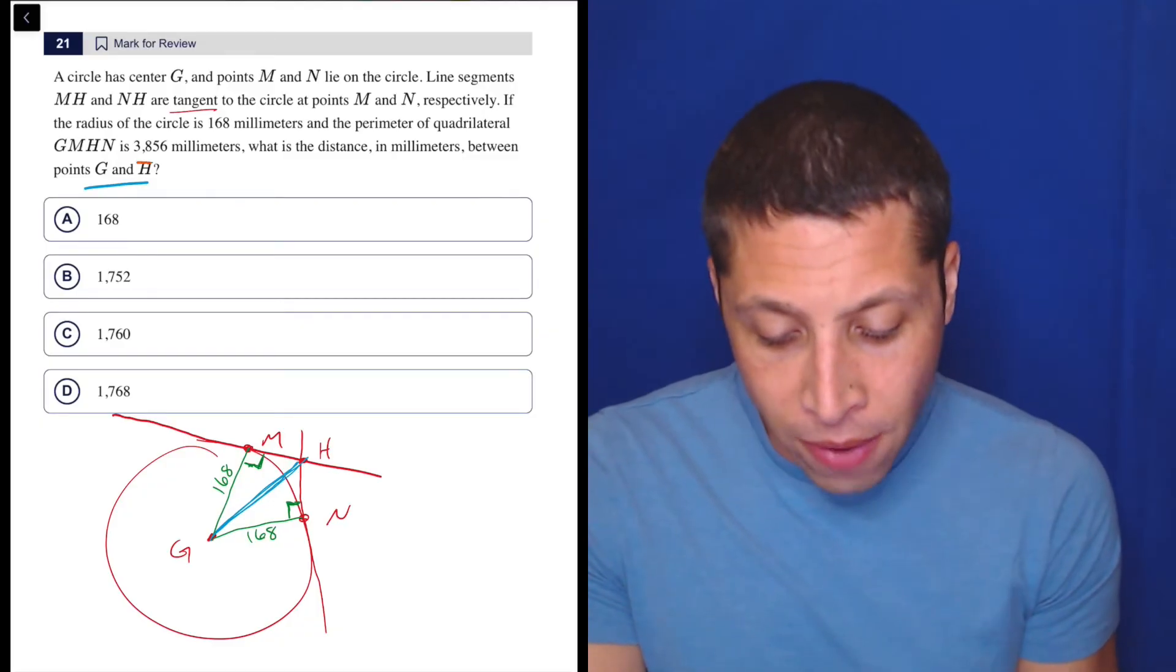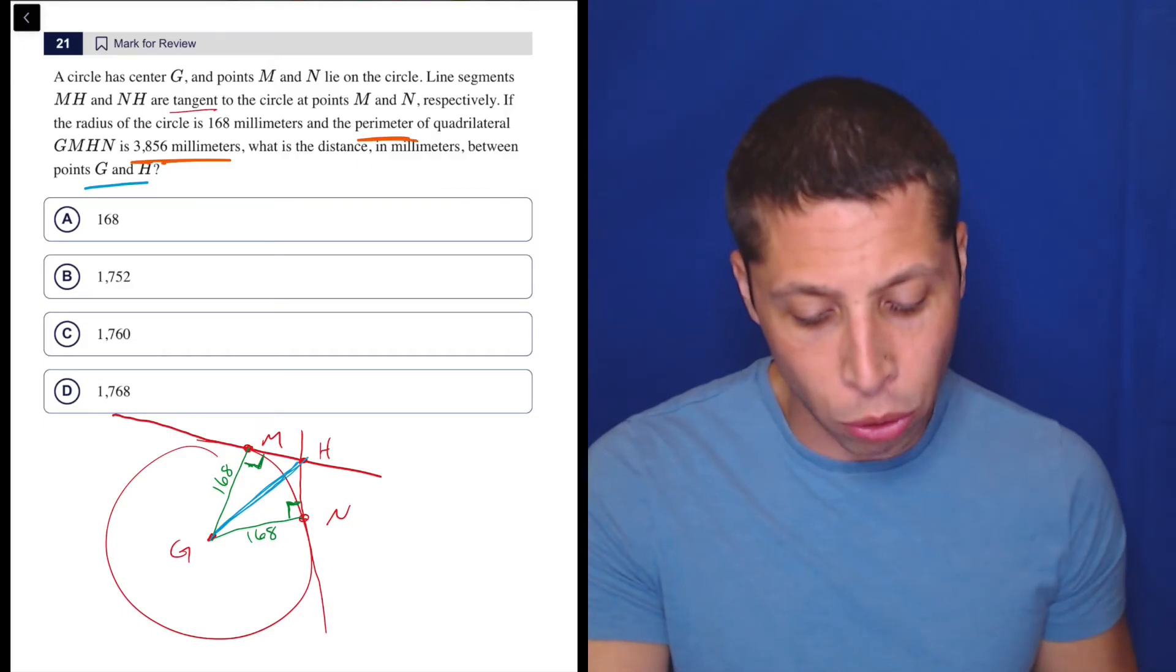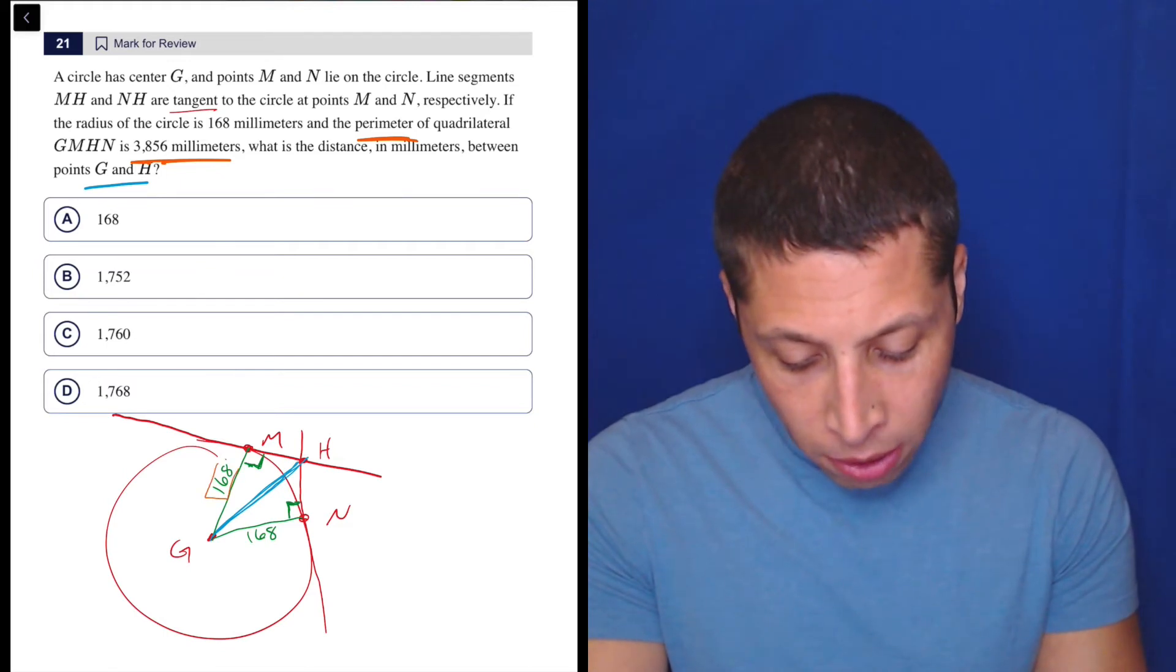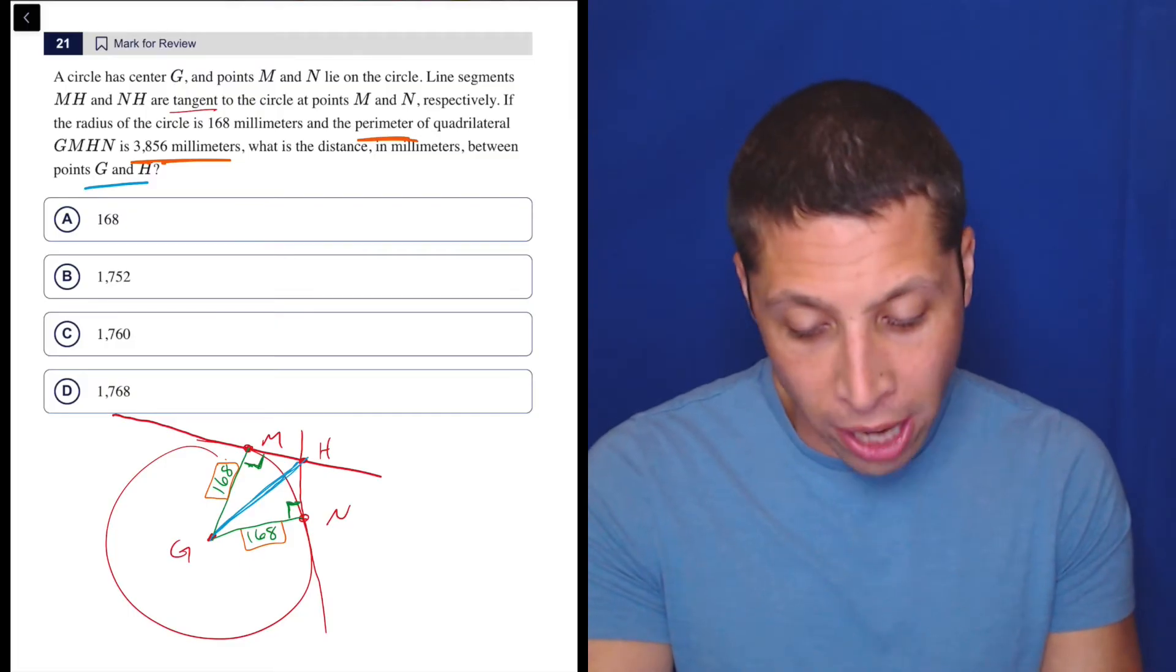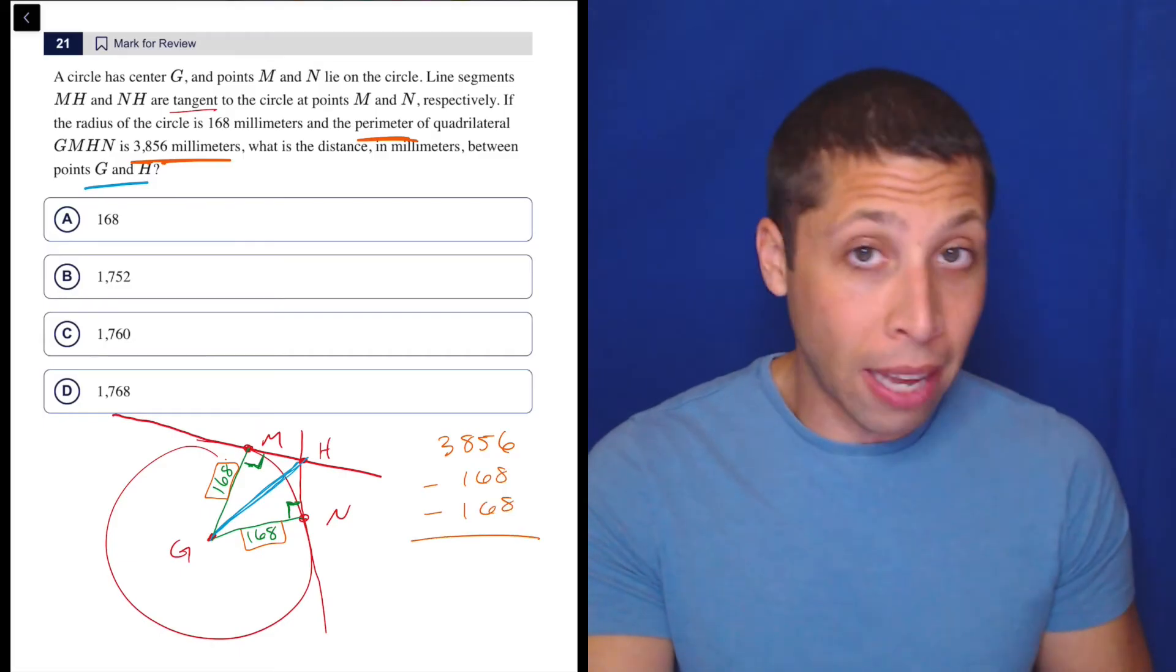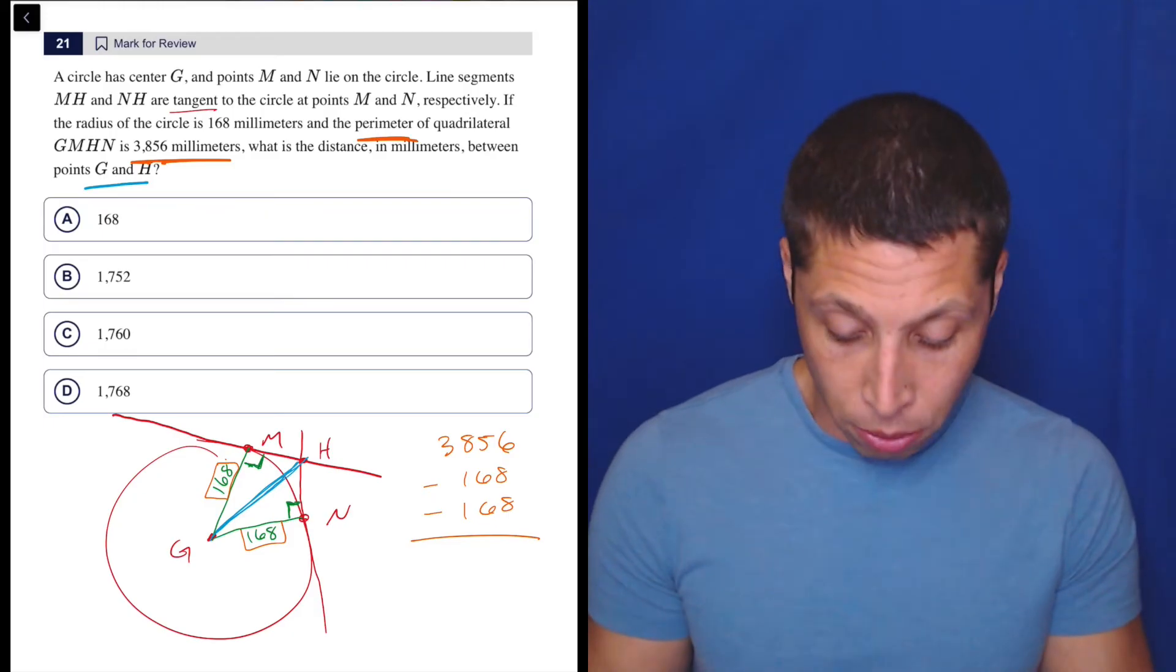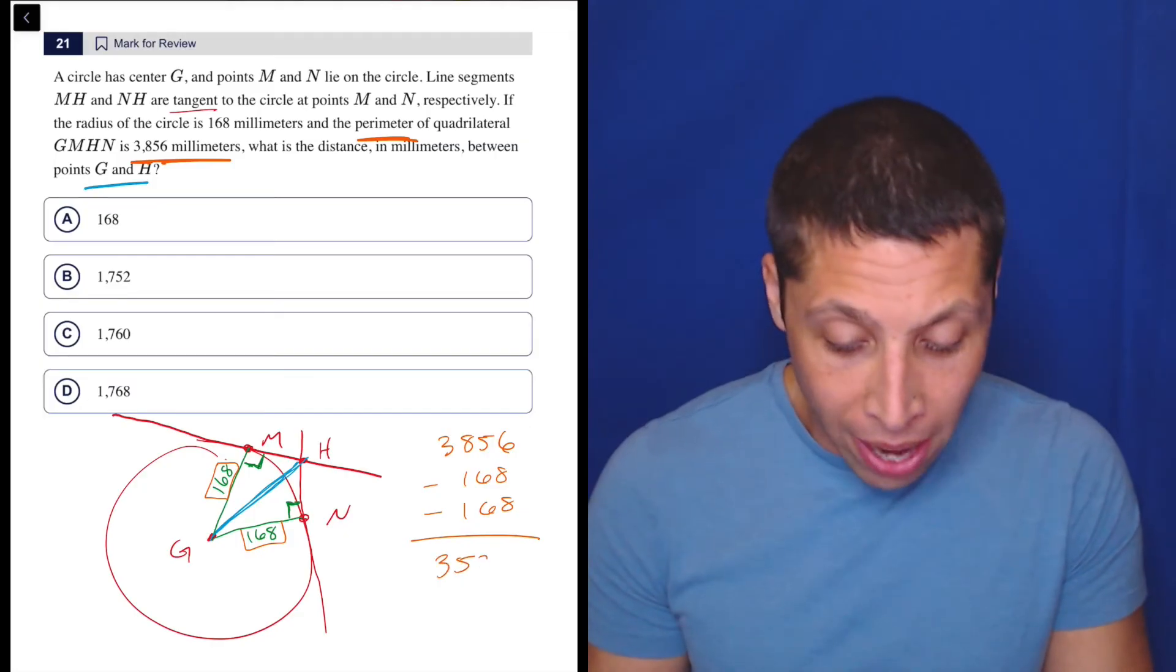So let's use another fact here: the perimeter is 3856 millimeters. That's the perimeter of the whole shape. And look, we've got two of the sides already accounted for: 168 and 168. So let's just do some subtraction here. 3856, we can subtract out those two sides. So I'll do the subtraction: 3856 minus 168 minus 168 is 3520.